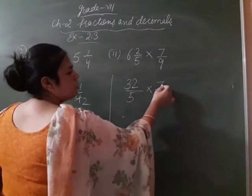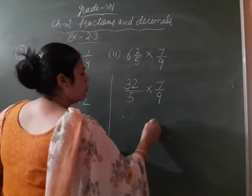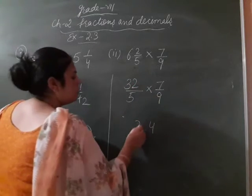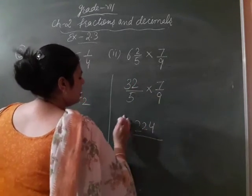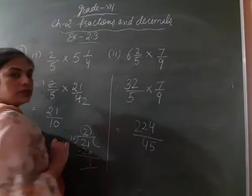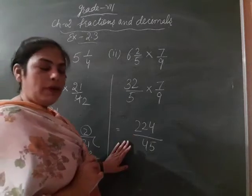So, multiply kati hai hai, 32, 7's are 7, 2's are 14, 1 carry, 7, 3's are 21 and 22 by 49, 5's are 45. This is our answer, this is improper fraction.